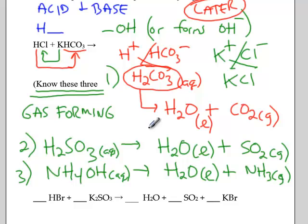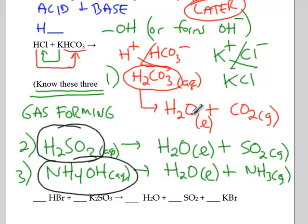So these aren't that bad. If you can remember these three chemicals, what they all have in common is one product is always H2O liquid, and then the other product you don't even have to remember. If you subtract off two hydrogens and an oxygen from H2CO3, you'll be left with CO2. If you do the same thing for H2SO3, subtract away two hydrogens and one oxygen, you'll be left with just SO2. Same thing for ammonium hydroxide.